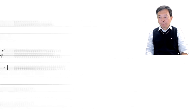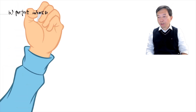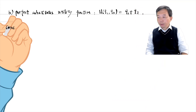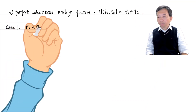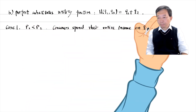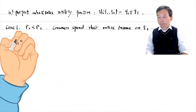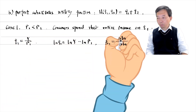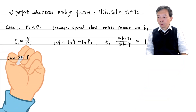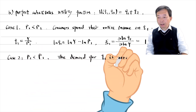For Cobb-Douglas, the perfect substitutes utility function is as follows. In the case that P1 is lower than P2, consumers spend their entire income on Q1, so we have the demand function for Q1. Taking the logarithm on both sides gives the income elasticity of demand equal to 1. In the other two cases, we cannot obtain a specific elasticity.